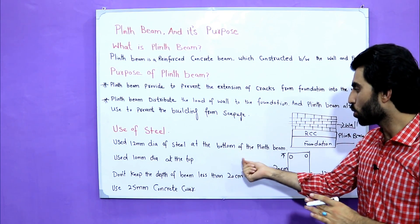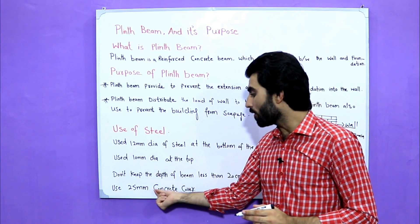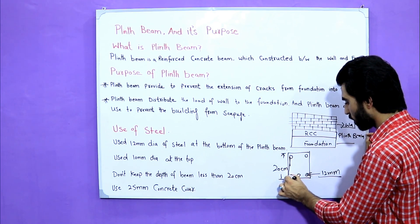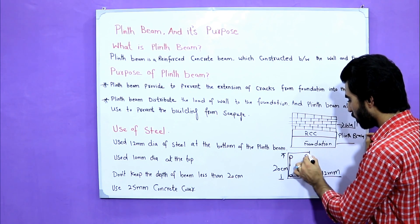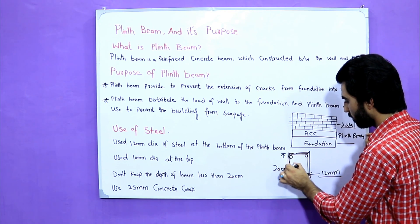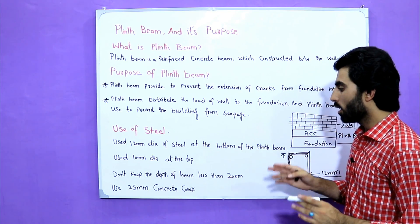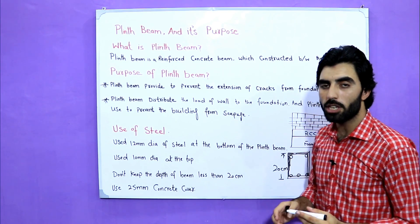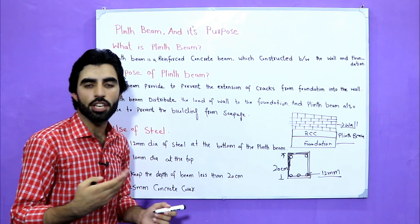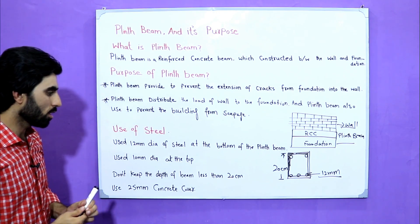I recommend you use the given data. Use 25 millimeter concrete cover — this is concrete cover, as you can see. Use 25 millimeter concrete cover. And for stirrups in plinth beam, the spacing of stirrups should not be less than 8 inches.